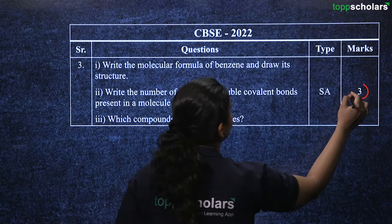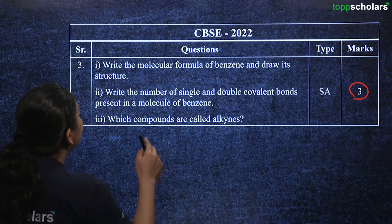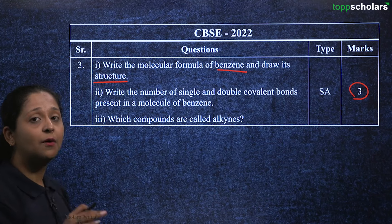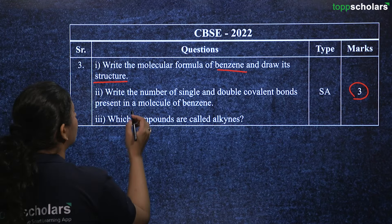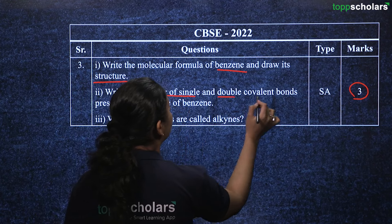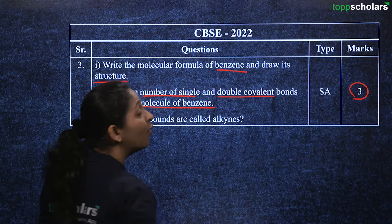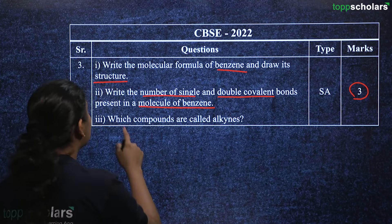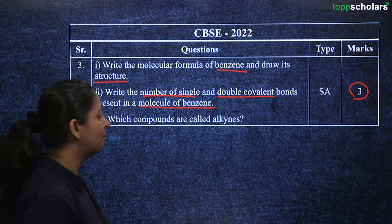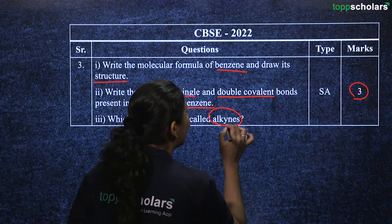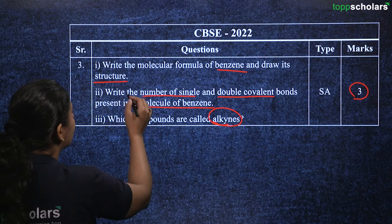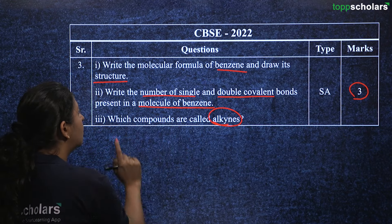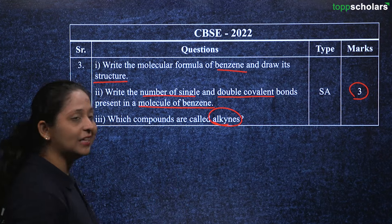Another three mark question from 2022: write the molecular formula of benzene and draw its structure. Write the number of single and double covalent bonds present in the benzene molecule. Also answer: which compounds are called alkynes? So in this question you must cover benzene's structure, its single and double covalent bonds, and define alkynes.